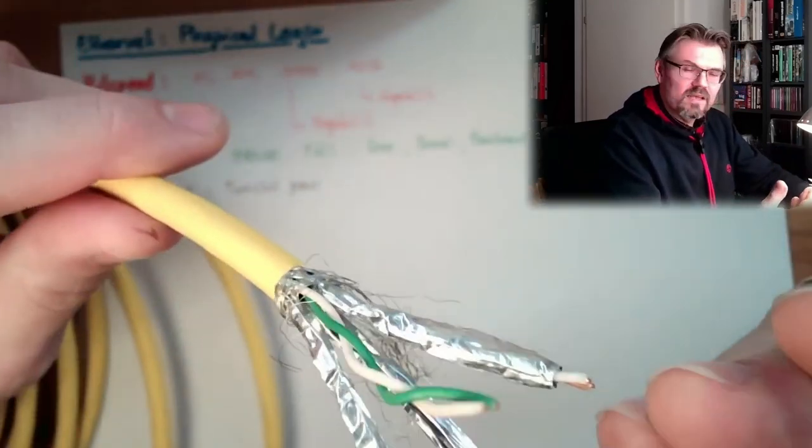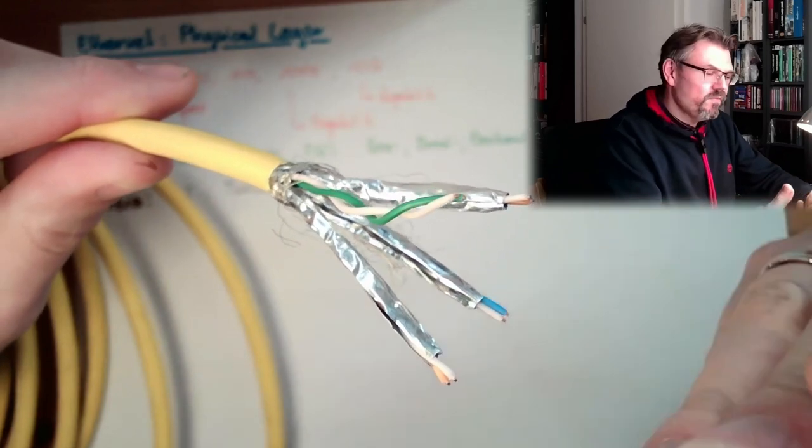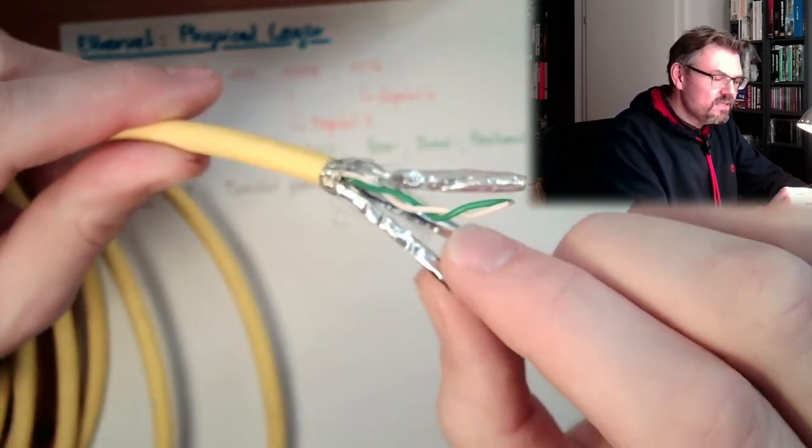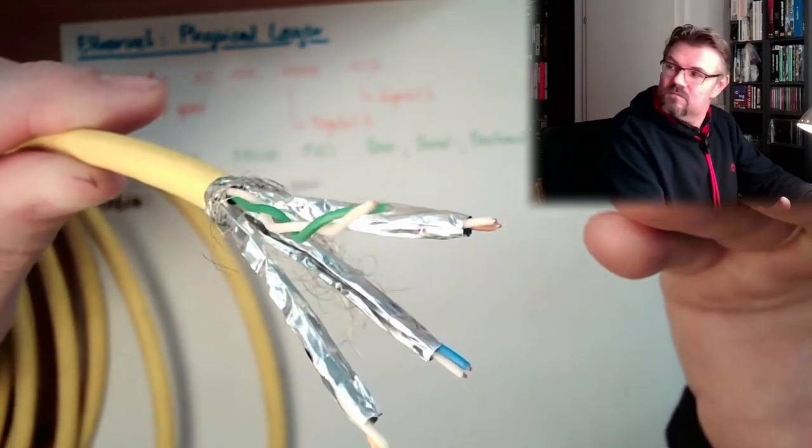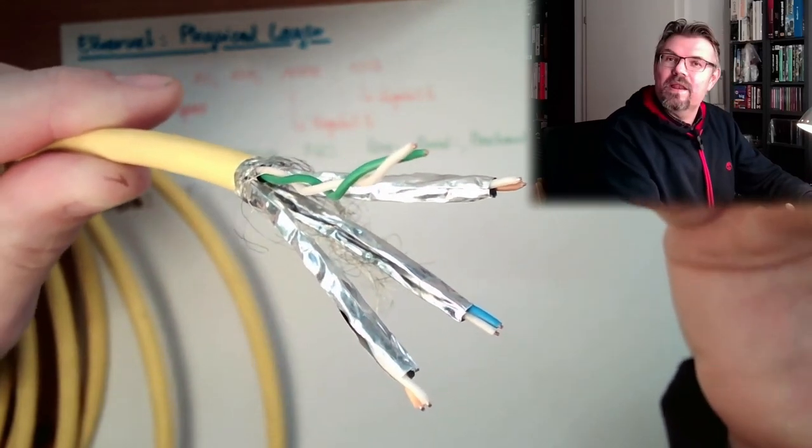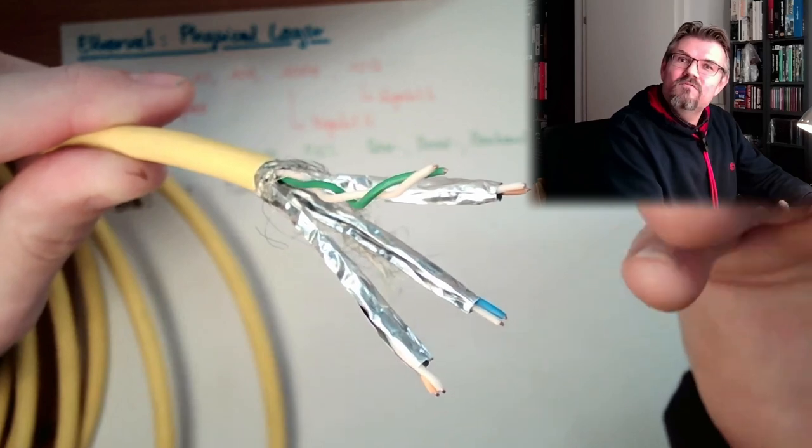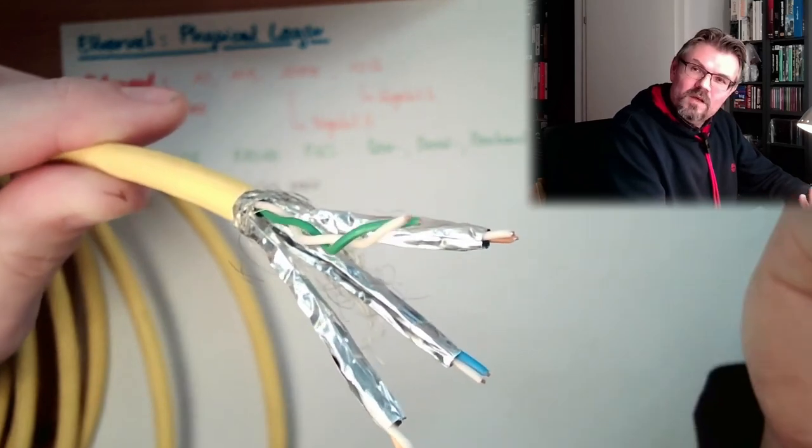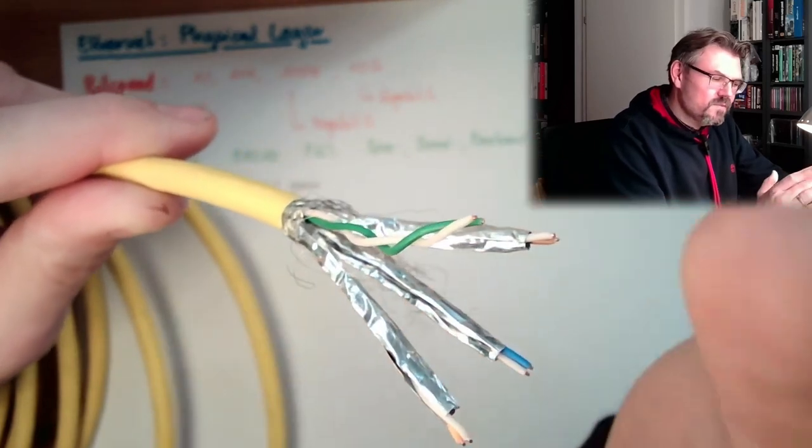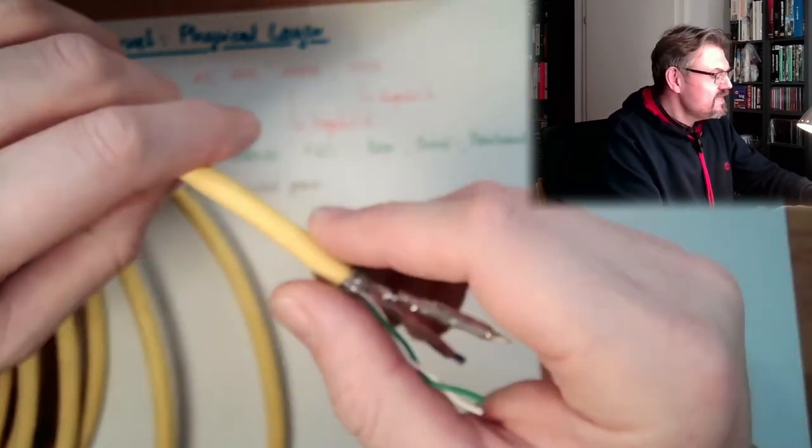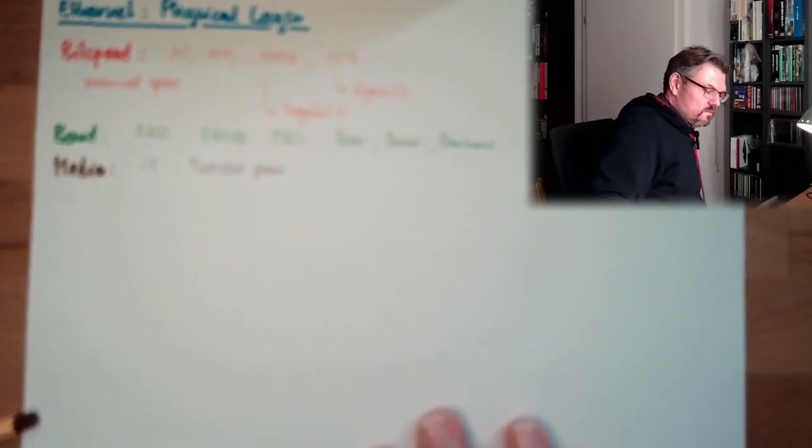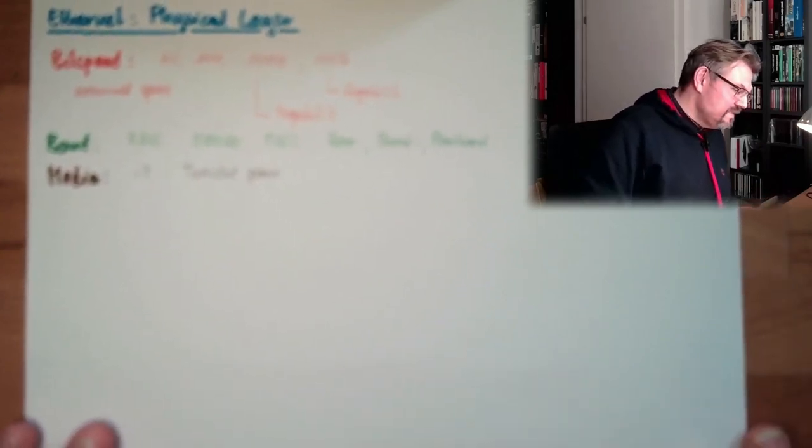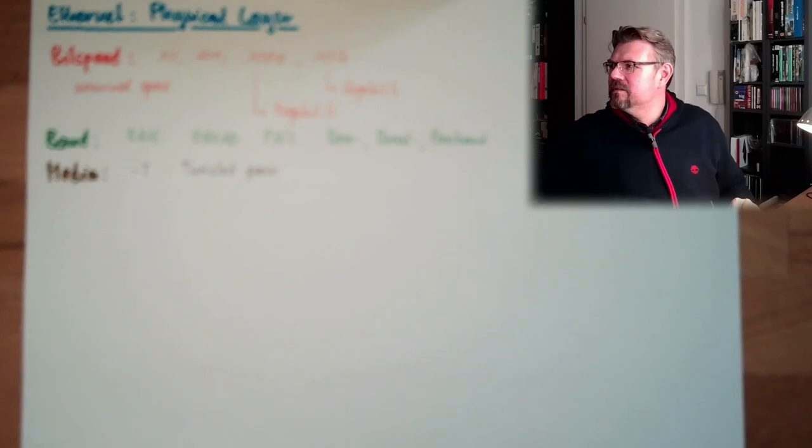So we have one, two, three, four pairs of twisted pairs. Four twisted pairs. And each of them is shielded. You see, significantly different to here. We have here in here we have just the wire. And here we have every pair shielded. And also around everything, there is even a shield wrapping around. This is a category 7 cable.